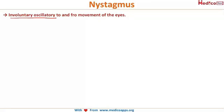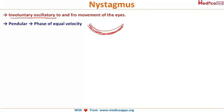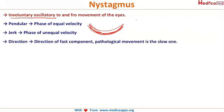There are a few terms to get familiarized with. Pendular means of equal velocity — like old clock pendulums that move with equal velocity on both sides. Jerk movement has a phase of unequal velocity: there is a slow phase followed by a fast phase, repeating. That is jerk — a phase of unequal velocity.